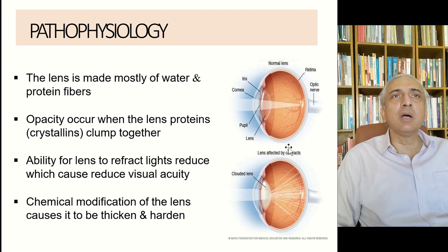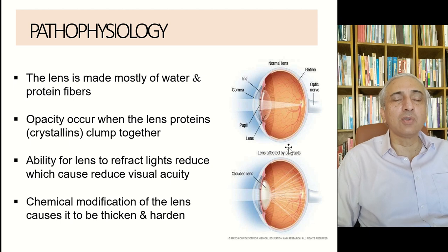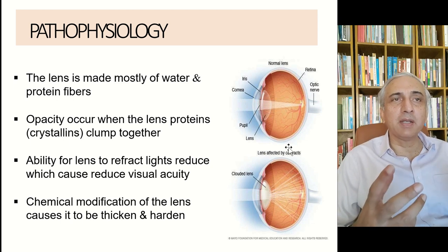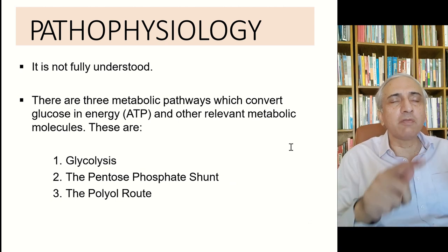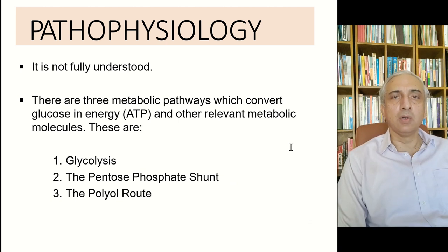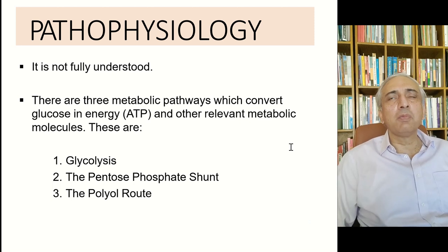The lens is made mostly of water and protein fibers. Opacity may occur when lens proteins clump together, reducing the ability of the lens to refract light, causing reduced visual acuity. Chemical modification of the lens causes it to thicken and harden. With age, the lens becomes hard because all the fibers become more compact.